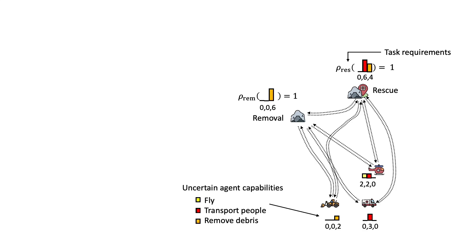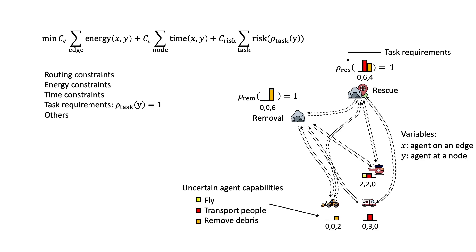Since there is uncertainty in the agent capabilities, we optimize energy, time, as well as the risk of task failures due to not having enough capabilities in the team. The main constraints include routing constraints, energy and time constraints, and task requirement constraints.